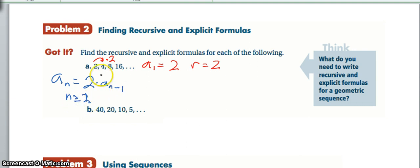An explicit formula for here uses the first term of the sequence times the ratio to the power of n minus 1. Pause the video and make sure that you can do this for b. Find a recursive and explicit for that sequence.